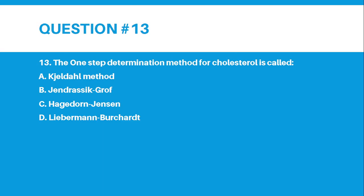Number 13. The one-step determination method for cholesterol is called? A. Keldal method, B. Gendrasik-Groff method, C. Hagedorn-Jensen method, or D. Lieberman-Burchard method.